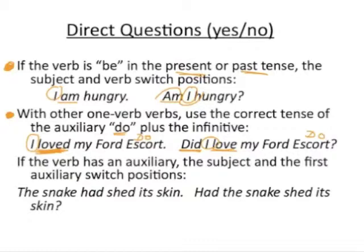If the verb has an auxiliary, the subject and the first auxiliary switch positions. For example: 'The snake had shed its skin' becomes 'Had the snake shed its skin?' The verb is 'had shed' — past perfect tense. We put 'had' in front of 'the snake,' but our verb in the question is still 'had shed.' Don't forget the question mark at the end.